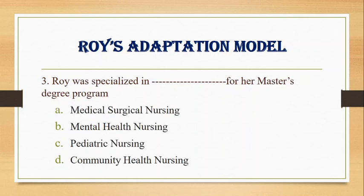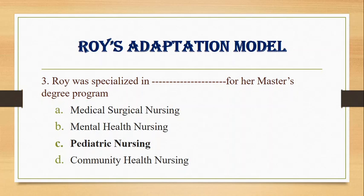Number 3. Roy was specialized in which specialty for her master's degree program? A. Medical surgical nursing, B. Mental health nursing, C. Pediatric nursing, D. Community health nursing. Answer: C. Pediatric nursing. Sister Roy was a pediatric nurse.